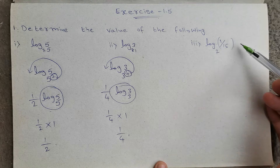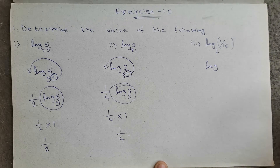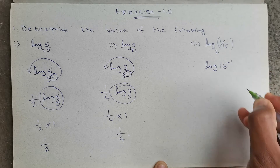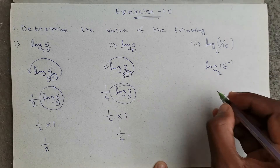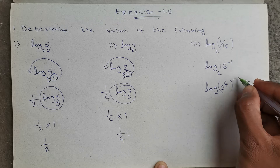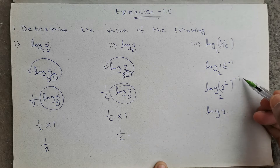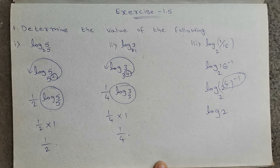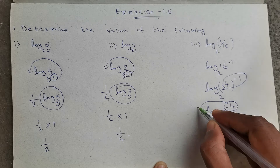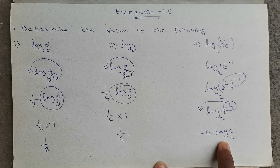Next, third question. Log (1/16) base 2. Here 1/16 is in the reciprocal form. So 1/16 can be written as 16 power minus 1, base 2. Now 16 can be written as 2 power 4. Here already power minus 1 is there, so for 2 power 4 whole power minus 1, simply multiply those two powers: 4 into minus 1 equals minus 4, base 2 as it is. Now this power is for the number, so it will go as it is: minus 4 log 2 base 2. Log 2 base 2 value is 1. So minus 4 into 1 equals minus 4.